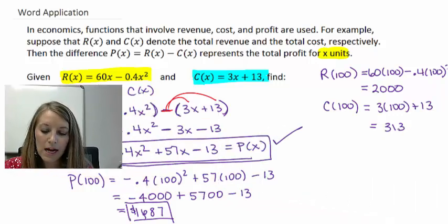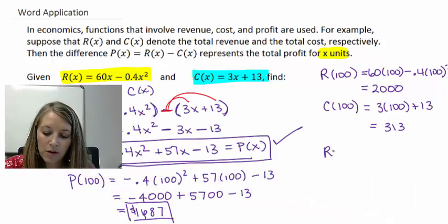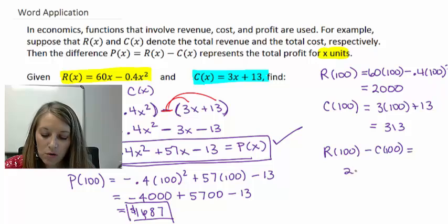So, then when I subtract these, my revenue of 100 minus my cost of 100 gives me 2,000 minus 313.